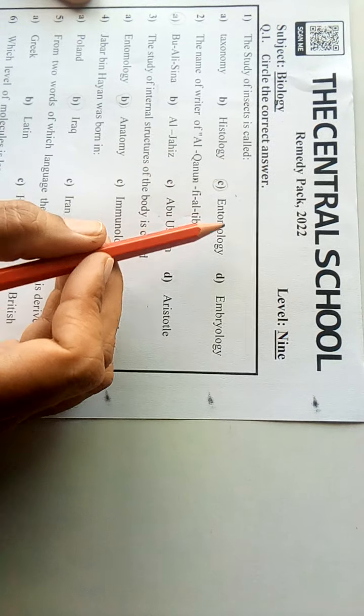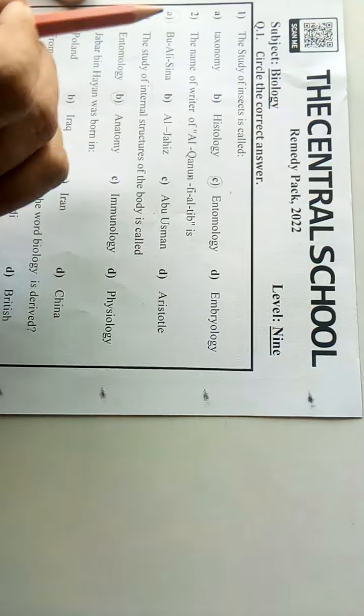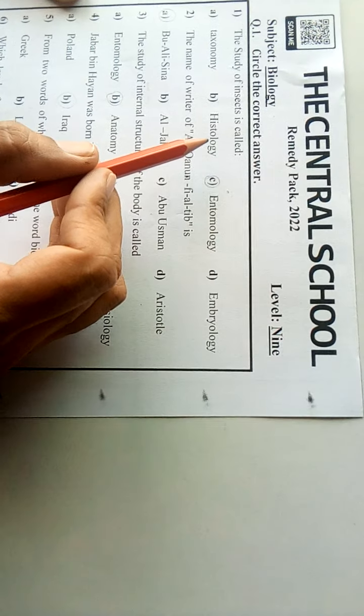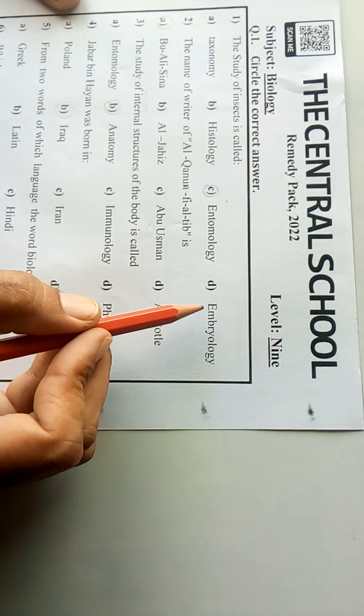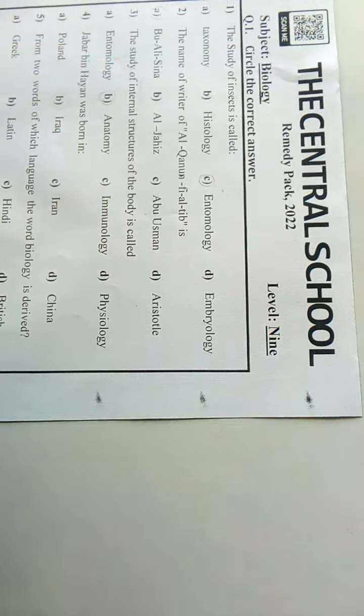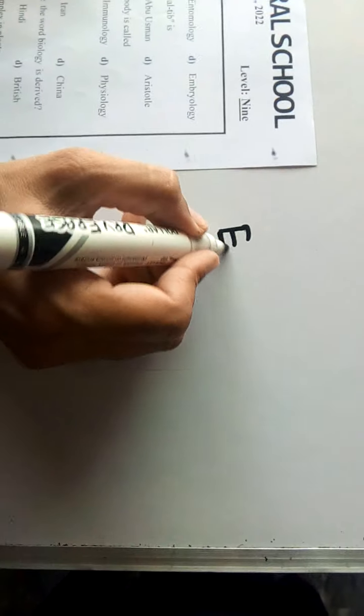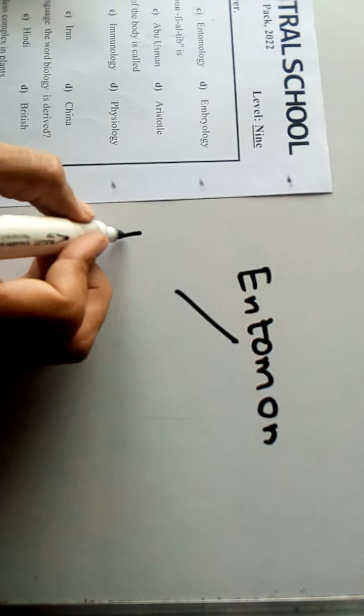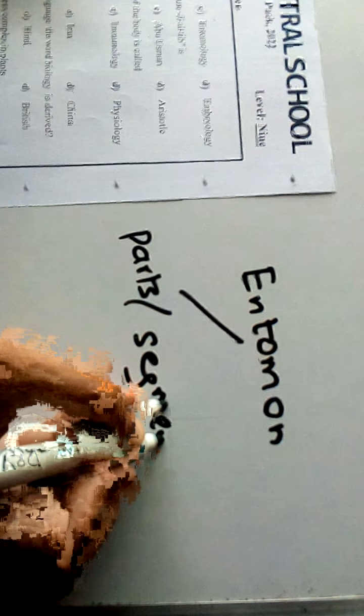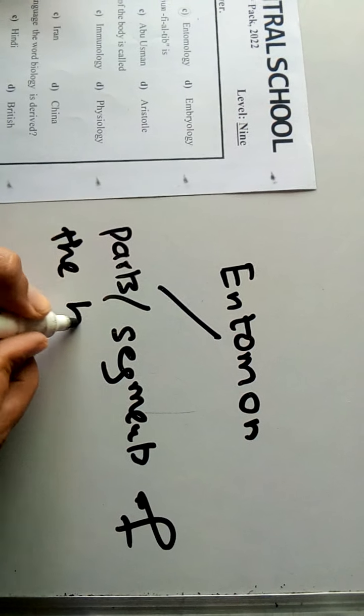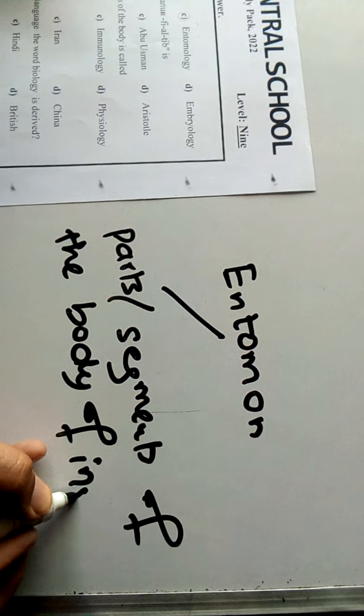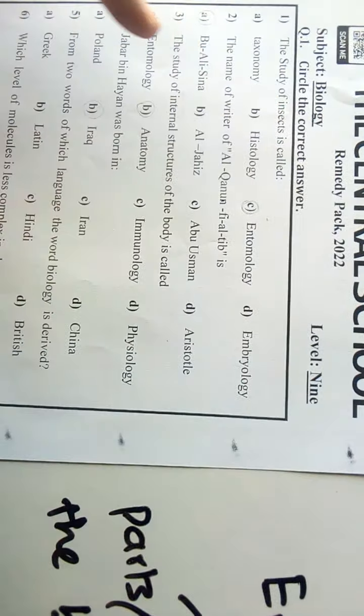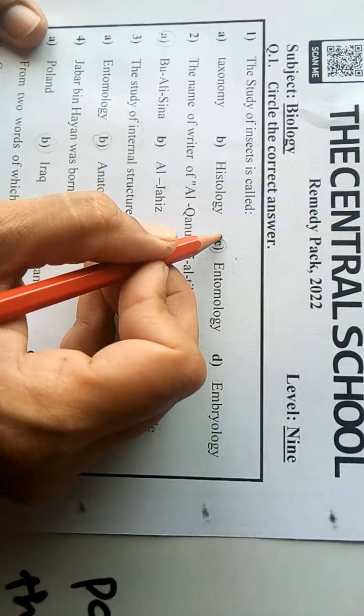All these are branches of biology that deal with various functions. Taxonomy deals with classification, histology deals with microscopic study of tissues, and embryology deals with the study of embryos. Whereas entomology, the word is derived from entomon, which means the parts or segments of the body of insects. Definitely, in this branch we study about insects, so we will mark the right option C.